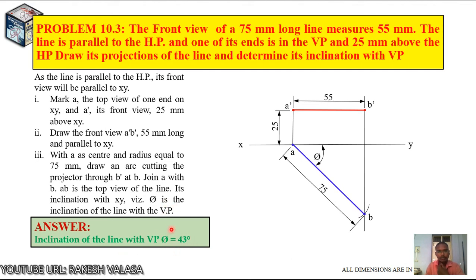If you have any doubt, you can follow this procedure. Finally, you can measure the angle with a protractor and write the answer below this sketch. You can follow the lettering procedure - that means letter height 6mm, width 5mm. Inclination of the line with VP, θ = 43 degrees.